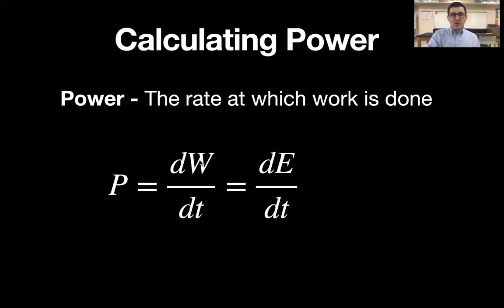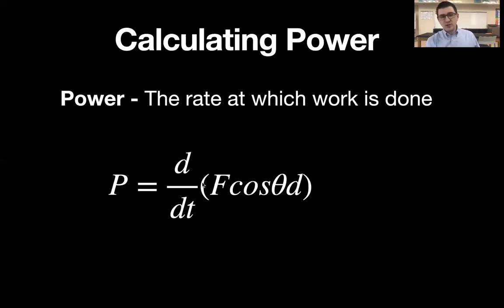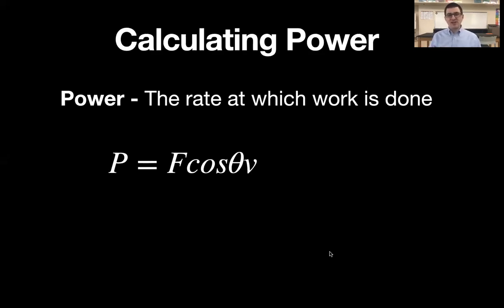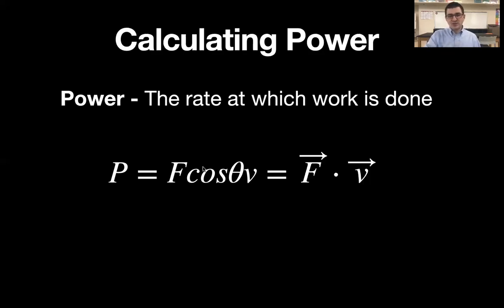Another way to see this: if power is the derivative of work with respect to time, and work is force through displacement, then if the force is constant — not changing with respect to time — we can factor it out and say power equals force times the derivative of displacement with respect to time. From unit one, the derivative of displacement with respect to time is velocity. So power also equals force times velocity, or more precisely, the dot product of the force vector and the velocity vector. If given average velocity, this yields average power; if given instantaneous velocity, it yields instantaneous power.